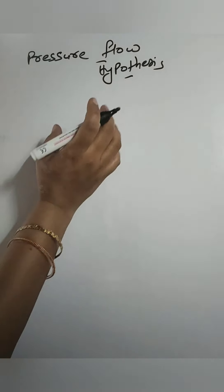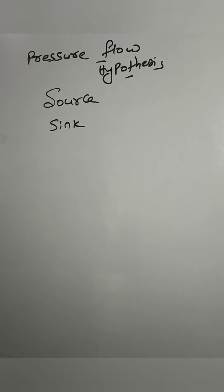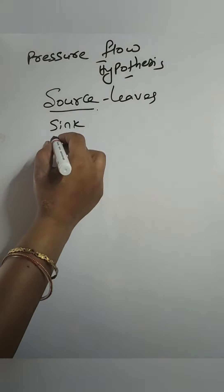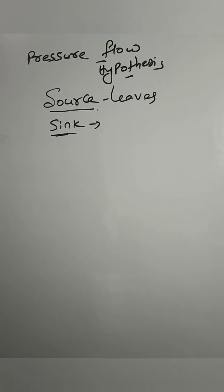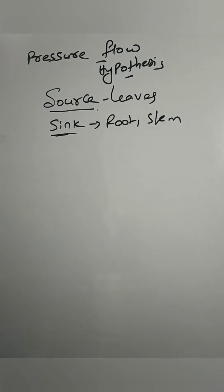To explain phloem transport, Munch proposed two terms: source and sink. The source is the part of the plant that synthesizes food — in plants, photosynthesis occurs in the leaf, so the leaf is the source. The sink is the region to which the food is transported — it may be the root, stem, fruits, or flowers — whichever part requires the food is the sink.